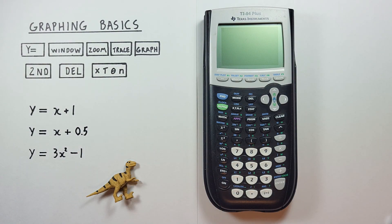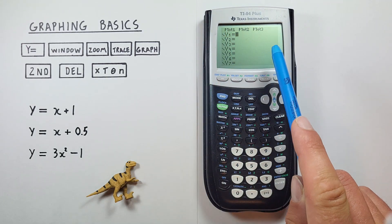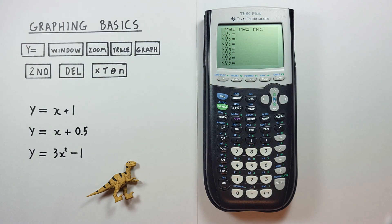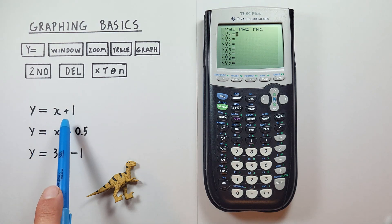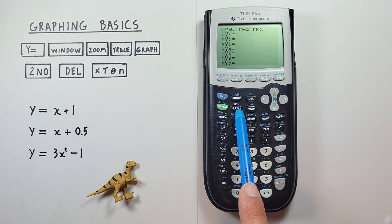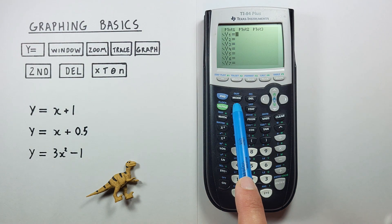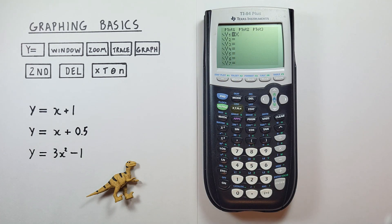To get started with graphing, first we have to go to the Y= menu. To do that, we hit the Y= key here, which brings up this menu where we can enter our functions. Let's start out with something simple: y equals x plus one. To enter x, we use the x variable key here — not the alpha x, this one up here at the top. We go ahead and hit that, we see x on our screen, and then we go plus one. We've entered our function.